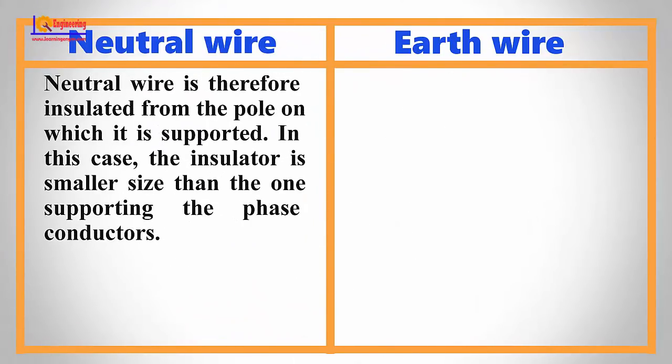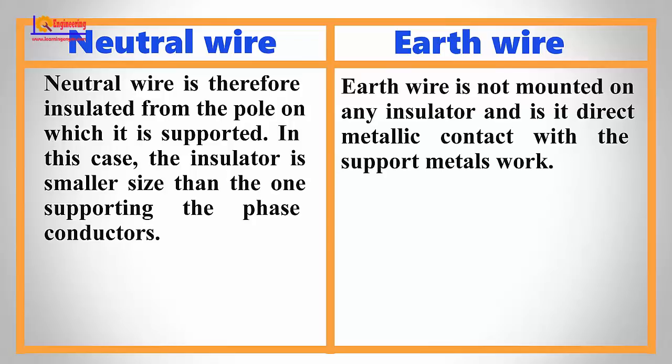Neutral wire is therefore insulated from the pole on which it is supported. In this case, the insulator is smaller size than the one supporting the phase conductors. Earth wire is not mounted on any insulator and is in direct metallic contact with the support metalwork.